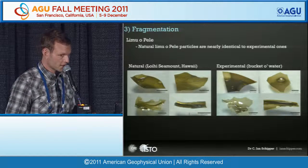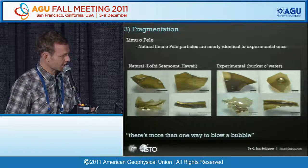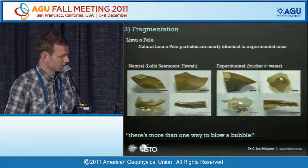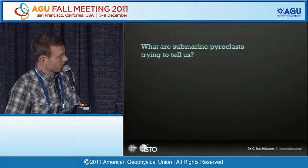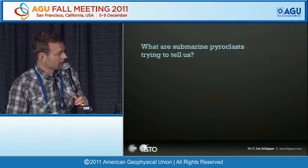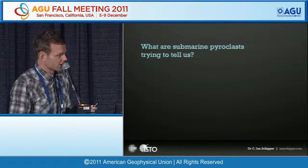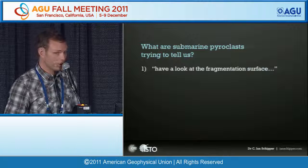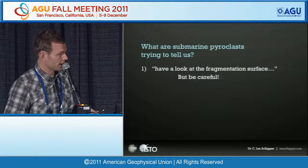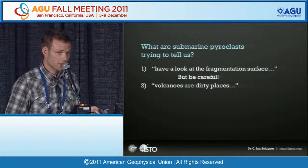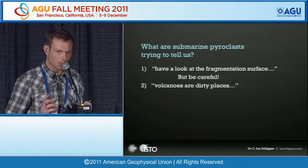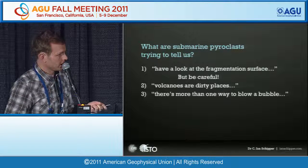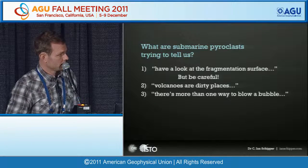This sums up the third thing submarine pyroclasts are trying to tell us: there's more than one way to blow a bubble, especially when dealing with low-viscosity basaltic melts. To summarize: submarine pyroclasts invite us to look at the fragmentation surface, but they say be careful — volcanoes are dirty places where erupting magma can interact not just with water, but with slurries and anything around. And there's more than one way to blow a bubble.